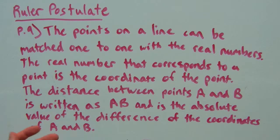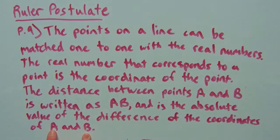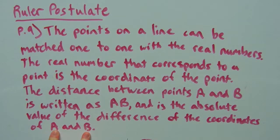So the measurement of the segment AB would just be written as AB. And the distance is the absolute value of the difference of the coordinates of A and B. So subtracting A from B or B from A and taking the absolute value of that will give you the distance.